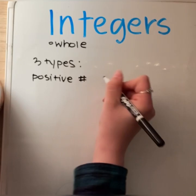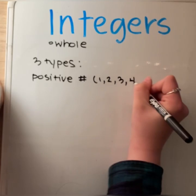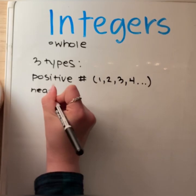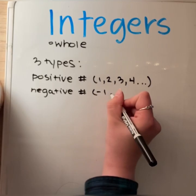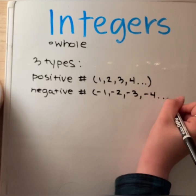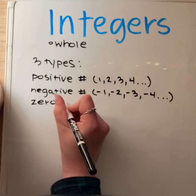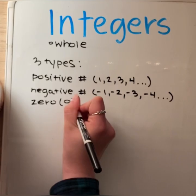The first type is positive numbers, which are positive 1, 2, 3, 4, and so on. We also have negative numbers, which are negative 1, negative 2, negative 3, and so on. But also 0 — 0 is also an integer and it does not receive a negative symbol, so it's just classified as 0.